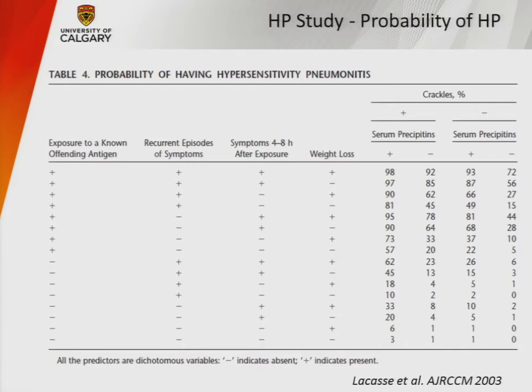At 98% probability, nobody would go on to biopsy that person. But conversely, if you don't have an exposure, recurrent symptoms, or any of those predictors — but you do have crackles and a positive serum precipitin — there's only a 3% chance you have HP, and you should probably look for an alternative explanation for their ILD.